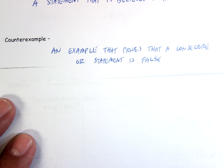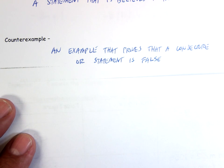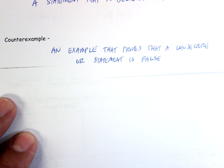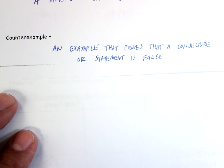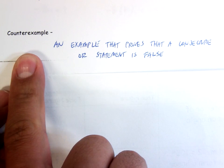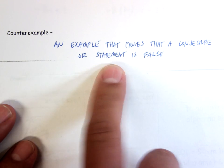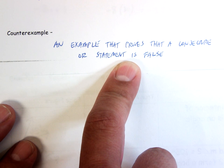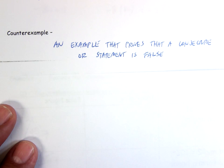If you're asked to prove something is true, that is difficult to do, because if we're saying something is true, it must be true 100% of the time. To show something is false, all I need is one example — we call that the counterexample. An example that proves a conjecture or statement is false. I just need one example to disprove the conjecture.